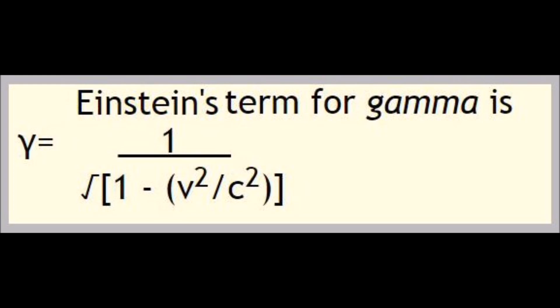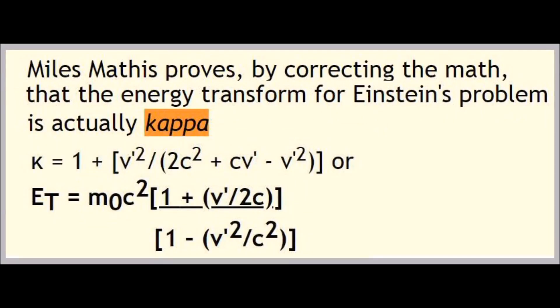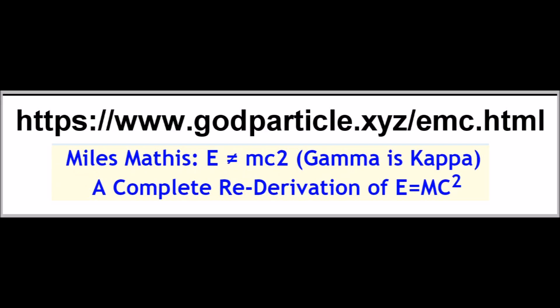Einstein's term for gamma is 1 over the square root of 1 minus V squared divided by C squared. Miles Mathis proves, by correcting the math, that the energy transform for Einstein's problem is actually kappa, and kappa equals 1 plus V prime squared divided by 2C squared plus CV prime minus V prime squared. Therefore ET equals M zero C squared times 1 plus V prime divided by 2C over 1 minus V prime squared divided by C squared. See Miles Mathis paper in the link below.